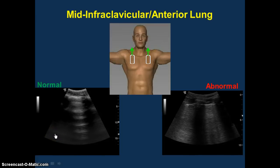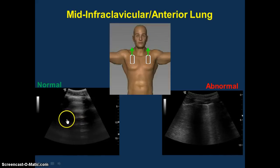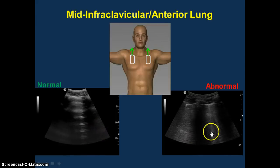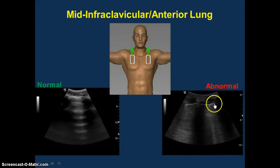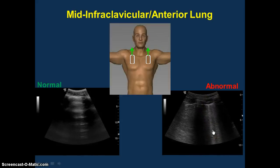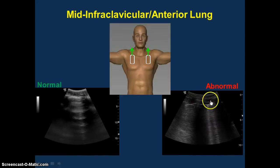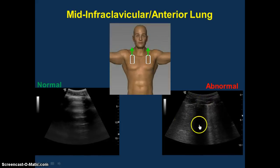Just because the lung is aerated doesn't mean it's normal — you can get this pattern in asthma, COPD, or even pneumothorax. What we're looking for is to determine whether the lung is aerated or wet. This is an example of wet lung. Here you see rib with shadow, rib with shadow, you see the lung sliding back and forth, and then you see these vertical artifact patterns we call B-lines. When you see multiple B-lines — meaning more than three in one intercostal space — that's suggestive of a wet lung. We're looking for bilateral evidence of B-lines, which suggest pulmonary edema.